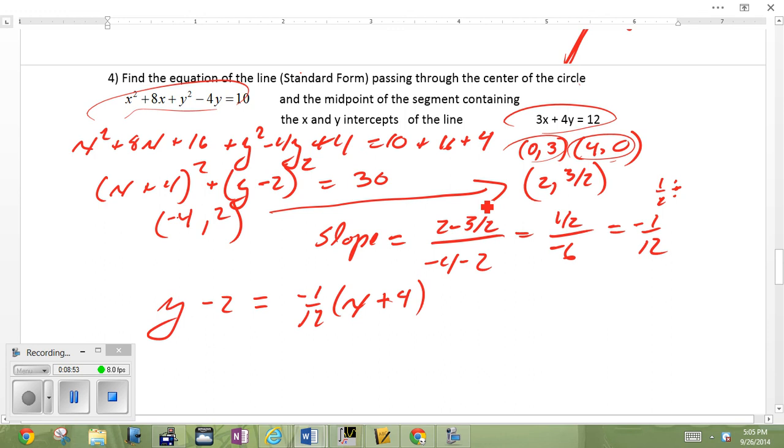So, we want the line going through 2, 3 halves, and negative 4, 2. Here's the slope. 1 half over negative 6, otherwise is known as negative 1 12. Slope negative 1 12, passing through either of those points. Here's the line.